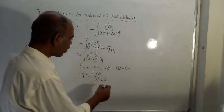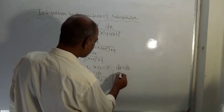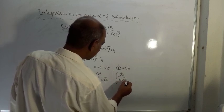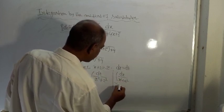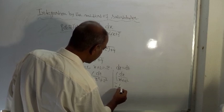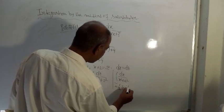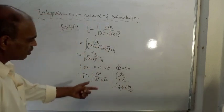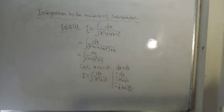Right. So form is what? This form is like integration of dx by x square plus a square. And integration of which is known to you which is equal to 1 by a tan inverse x by a. This result is known to you. This is the formula.